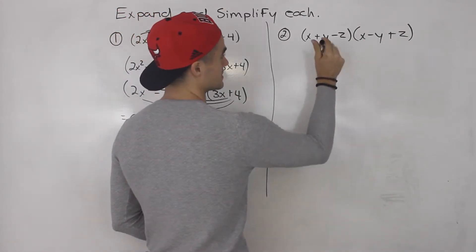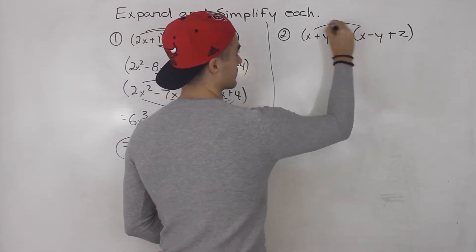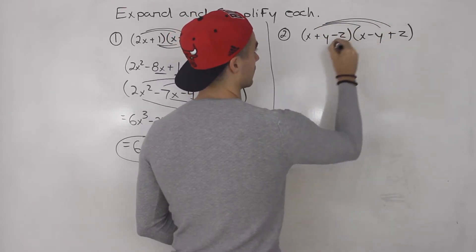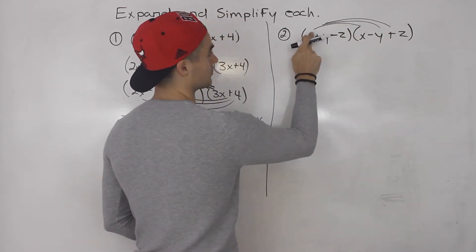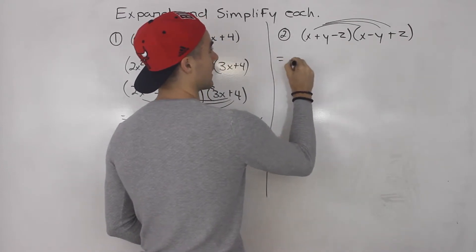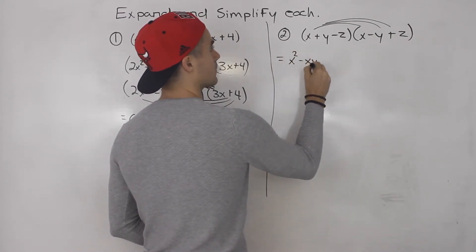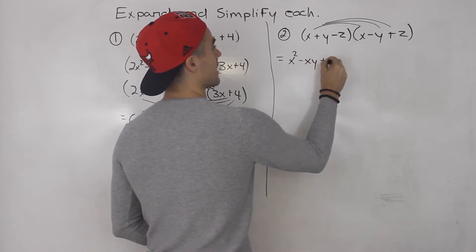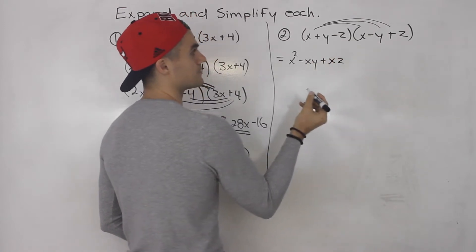So moving on to the second question, same thing. Now we just got to FOIL out all of this stuff. So multiplying the x by all three terms in this bracket, we would get x squared minus xy plus xz. Like that.